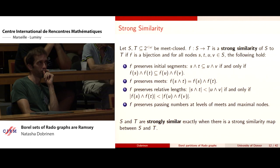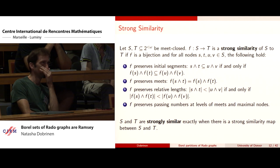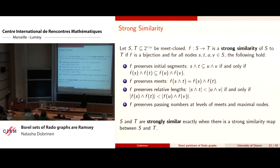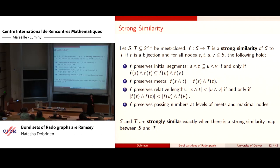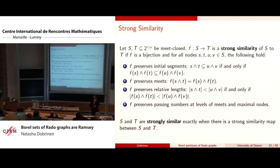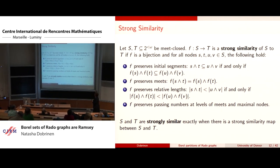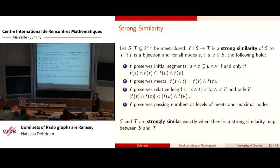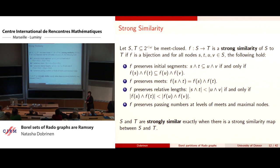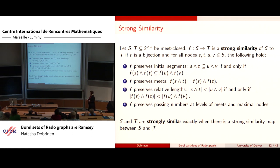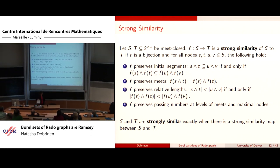The definition of strong similarity requires: taking initial segments to initial segments, meets to meets, preserving relative lengths, and preserving passing numbers. I'll give a couple of examples of strong similarity types.